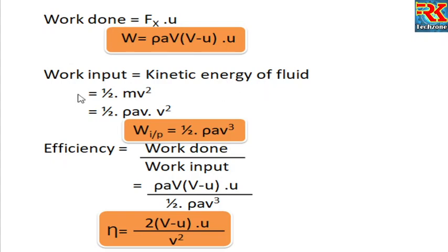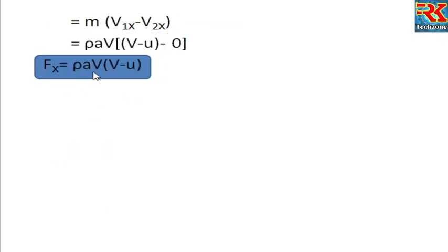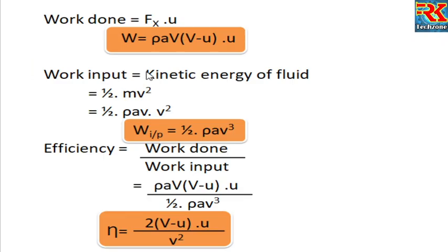Work done equals Fx into u. For the fixed plate, Fx is rho A V squared. Multiplying by u gives work done. Work input equals half rho A V cubed, as we derived in the previous videos.